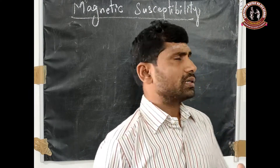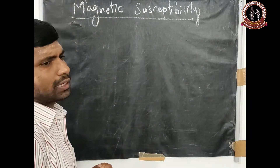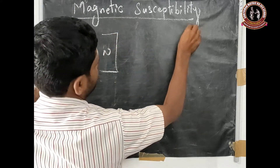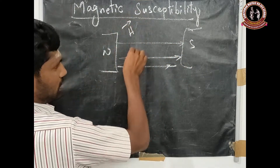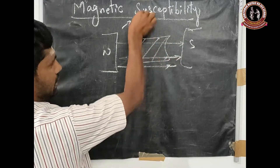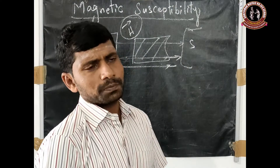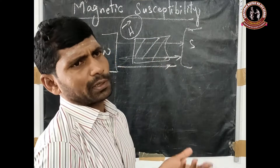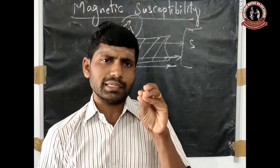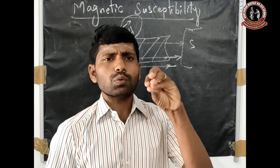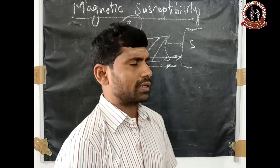The next magnetic property is magnetic susceptibility. When a material is placed in an external magnetic field H vector, magnetic susceptibility describes how the material responds to that external magnetic field — how easily or strongly it changes to become a magnetic material.